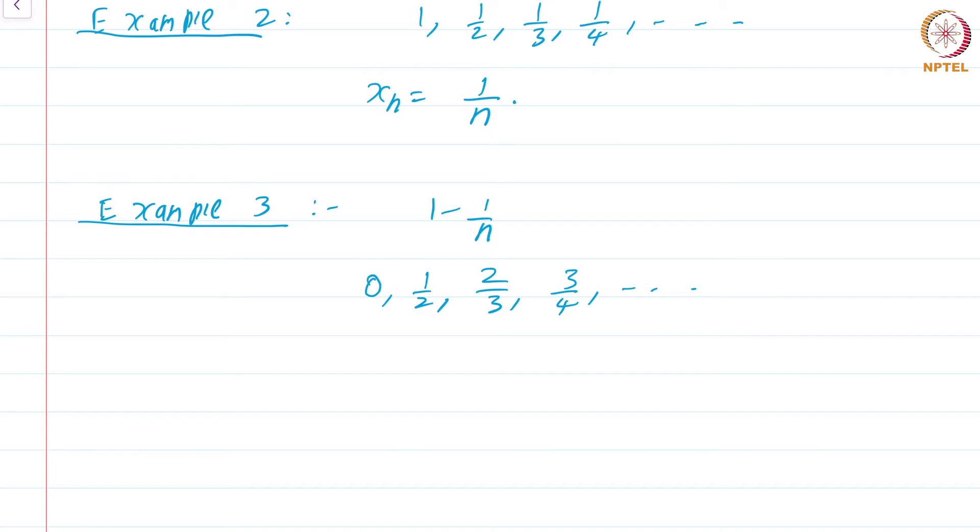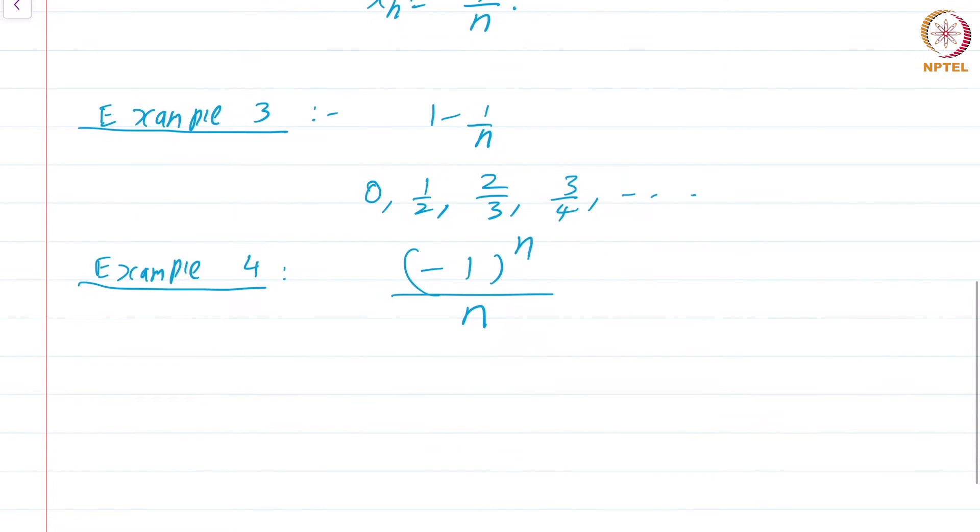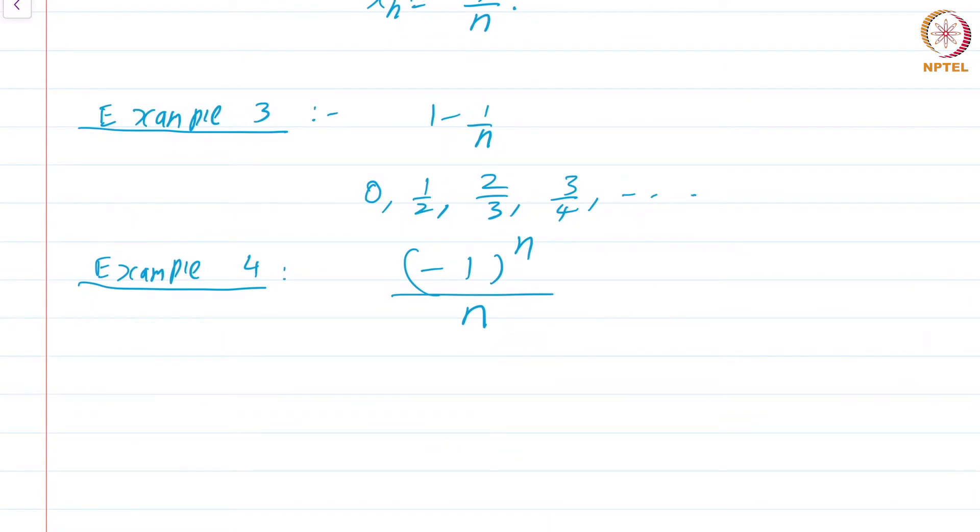Example 4: Let us twist example 2 again and consider the sequence minus 1 power n by n. The first term is minus 1, then plus half, then minus 1 by 3, then plus 1 by 4, and so on. If you observe carefully, this sequence is neither increasing nor decreasing. It seems to be jumping here and there.